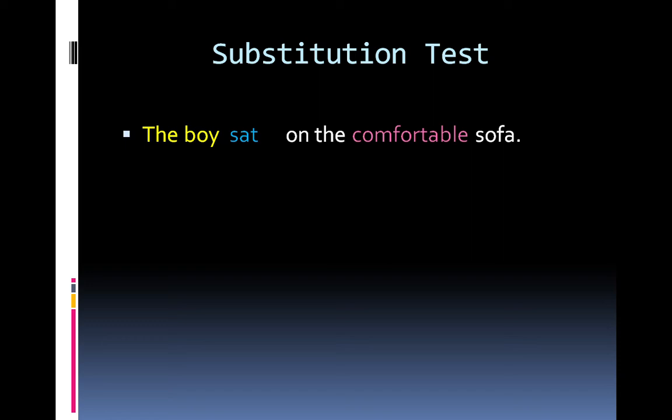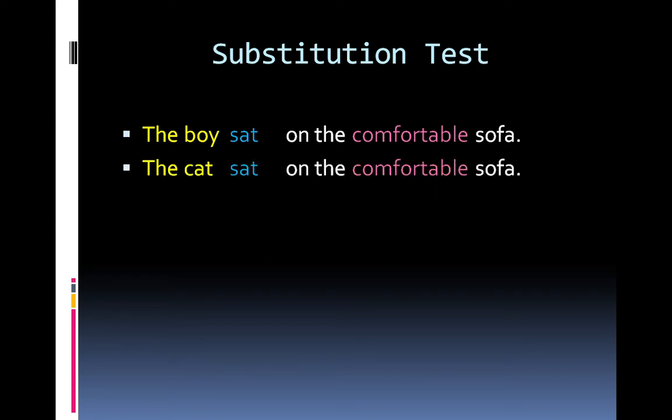Look at this sentence: 'The boy sat on the comfortable sofa.' It's a very simple, easy and meaningful sentence. We are going to replace 'the boy' with another set of words. 'The cat sat on the comfortable sofa.' Does this second sentence make sense? Yes, it does — it's just as meaningful as the first one. 'Ali sat on the comfortable sofa.' Is this sentence also meaningful? Yes, it is. It means that 'the boy,' 'the cat,' and 'Ali' belong to the same class of words.